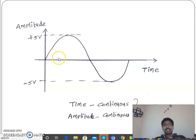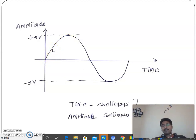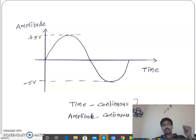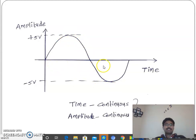When a signal has continuous time and continuous amplitude — meaning from 0 to 5 volts every voltage level is present, including 3.5 volts, 3.51 volts, and so on — that signal is called an analog signal. Analog signal contains both continuous time and continuous amplitude. From plus 5 to minus 5, the amplitude is varying continuously.